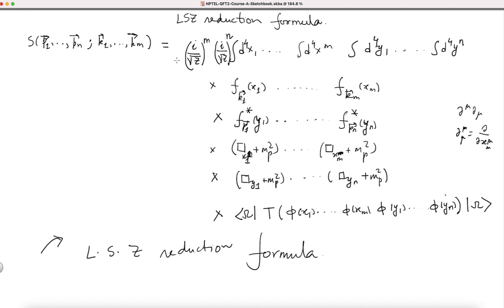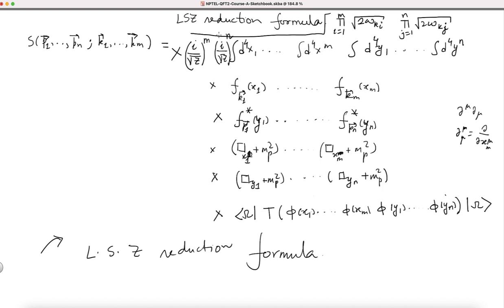We also missed factors of √(2ω_{k₁}) for x₁ and similarly for other variables. We should multiply factors: ∏_{i=1}^{m} (2ω_{kᵢ}) × ∏_{j=1}^{n} (2ω_{kⱼ}). So that also should be multiplied. That is our complete LSZ reduction formula.